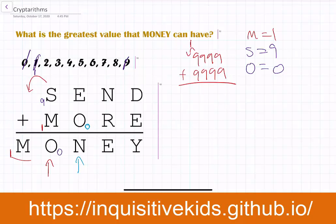E plus 0 doesn't equal E — it equals N, a different letter. We all know that when you add 0 to a number, that number stays the same. So how did E become N? The only possible explanation is that a 1 was carried from the tens place to the hundreds place.